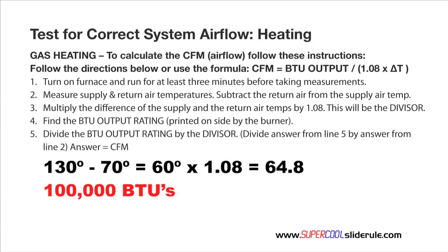We are going to divide that by our divisor, which we just calculated earlier, which was 64.8. Do the math on this, we come up with 1,543. Plain and simple, that is our CFM through this furnace.